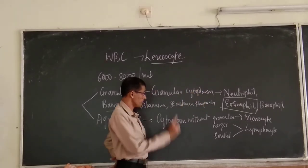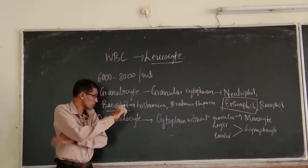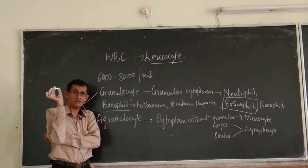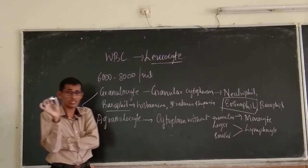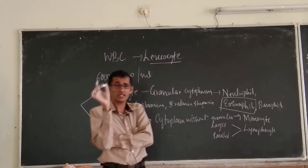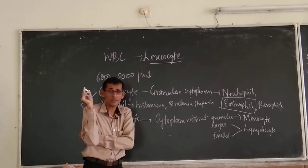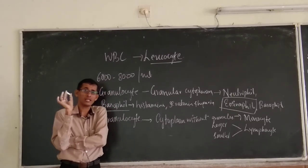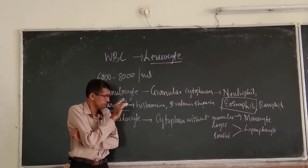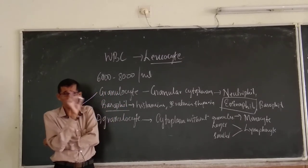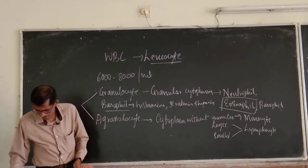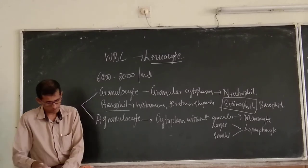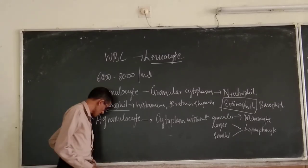Lymphocytes are involved in the production of antibodies, contributing to humoral immunity and cell-mediated immunity. There are B lymphocytes and T lymphocytes. Lymphocytes are involved in the production of immune power.